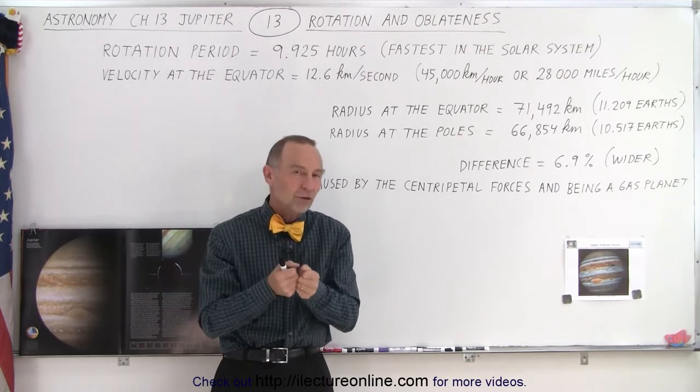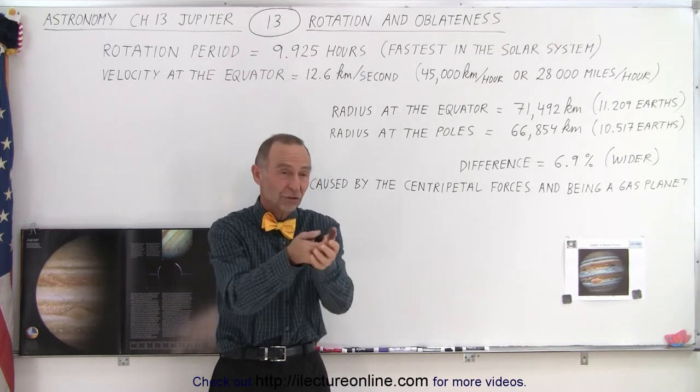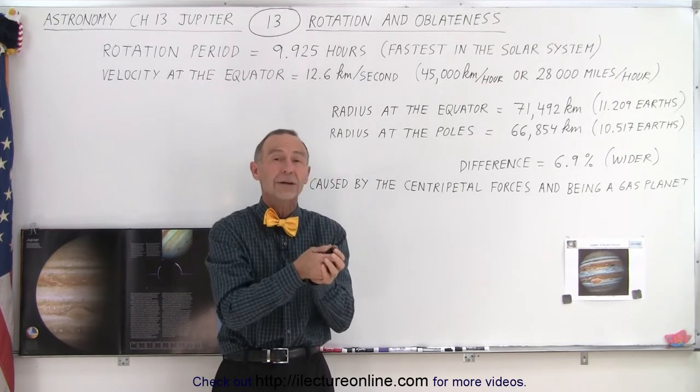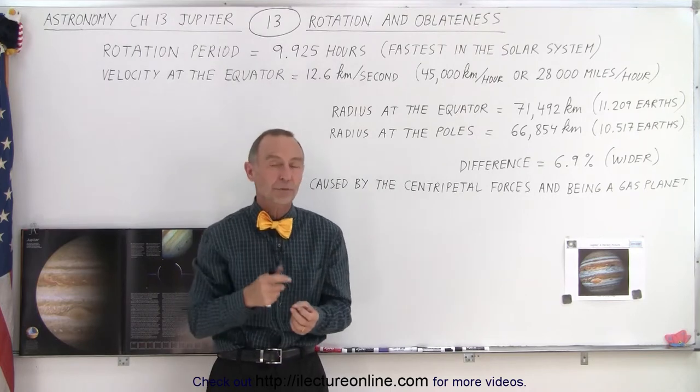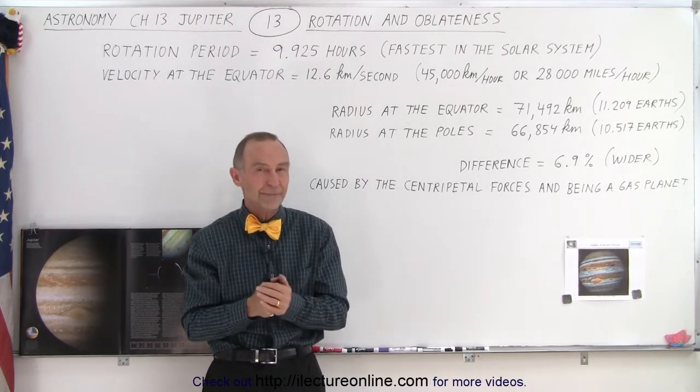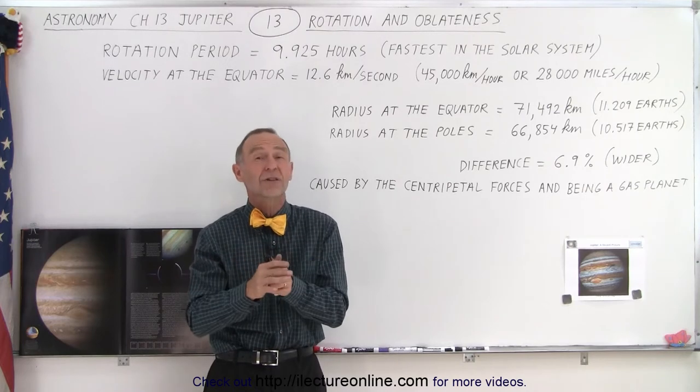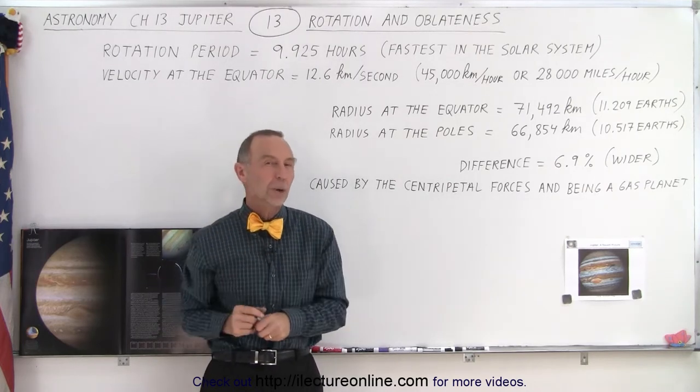The forces, the gravitational forces on the planet are not sufficient to hold in the equator as much as it can on the poles, because of that fast rotational speed. And so therefore, the centripetal forces cause that bulge to exist near the equator.